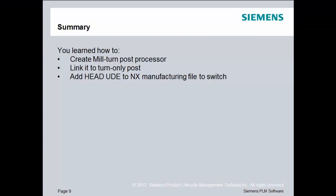In summary, you learned how to create a mill-turn post processor. You learned how to link it to a turning-only post. And then finally, you learned how to add the head user-defined event to the NX manufacturing file so that you can tell NX or CAM Express when to switch between the different post processors that you have linked together.